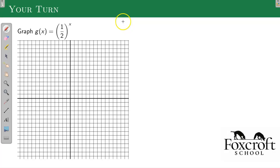Here's another one you can graph on your own, 1 half to the x. So pause the video. Try that on your own. 1 half is a number that's smaller than 1, so it's going to get bigger to the left and smaller to the right. So it levels off over here, and then it gets big to the left.